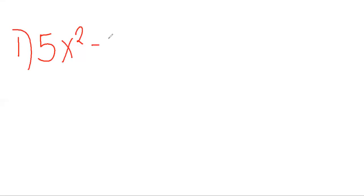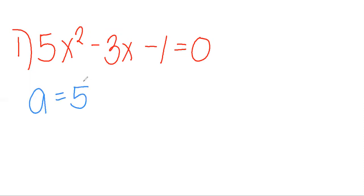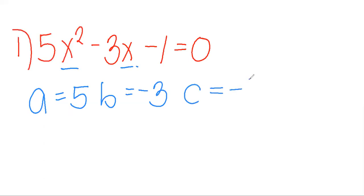Let's say we're given 5x squared minus 3x minus 1 equals 0. What is the value of A, B, and C? The value of A is 5, since it's the numerical coefficient of x squared. The value of B is negative 3, since it's the numerical coefficient of x. And the value of C is negative 1, since it's the constant value.